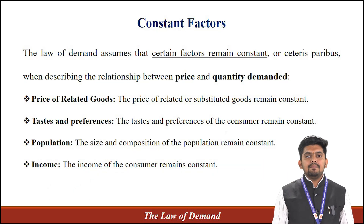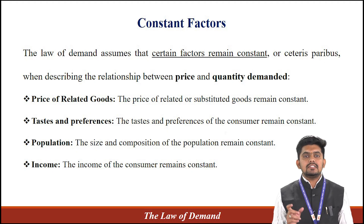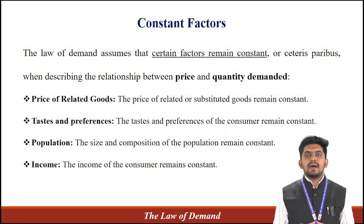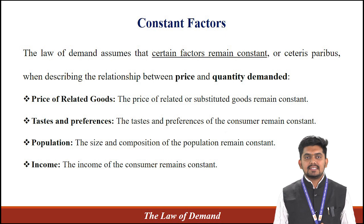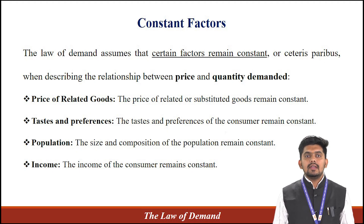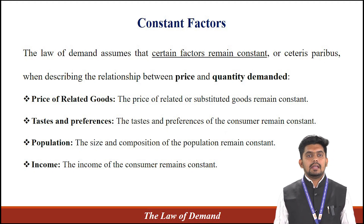There is one concept — the constant factor, or ceteris paribus. The Law of Demand assumes that certain factors remain constant, which in Latin we call ceteris paribus, when describing the inverse relationship between price and quantity demanded. The price of related goods is one important ceteris paribus condition — the price of related or substitute goods must remain constant. Next, the tastes and preferences of the consumer remain constant. Another factor is population — the size and composition of the population remain constant. And last, income — the income of the consumer must remain constant.